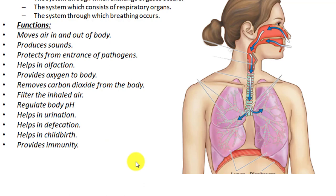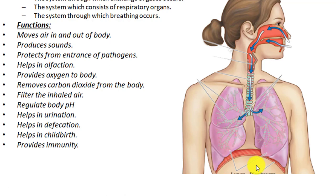The respiratory system also helps in childbirth. During delivery, force must be applied on the fetus to take the baby out. The female takes in air to increase lung volume; the lungs apply pressure on the diaphragm, the diaphragm on the abdominal viscera, and the abdominal viscera on the pelvic viscera. Since the uterus is in the pelvic region, pressure is applied on the uterus and then on the baby, helping deliver it.